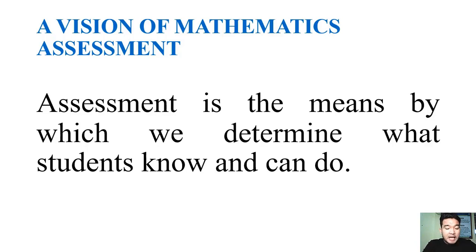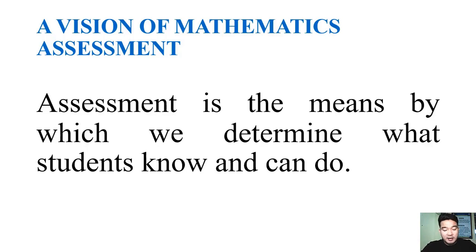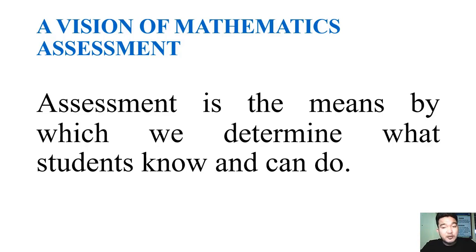Assessment can help convince the public and educators that change is needed in the short run, and that efforts to change mathematics education are worthwhile in the long run. Conversely, it can involve attempts at change. Assessment that is out of synchronization with curriculum and instruction gives the wrong signals to all those concerned with education. Assessment should be synchronized with curriculum and instruction — they should have the same goals, the same objectives, and the same desired outcomes. That is the reason why, if there is synchronization among these three — assessment, instruction, and curriculum — mathematics education becomes successful.